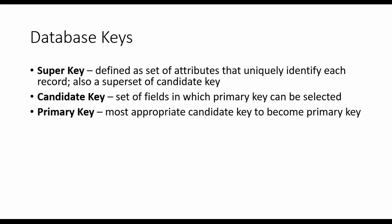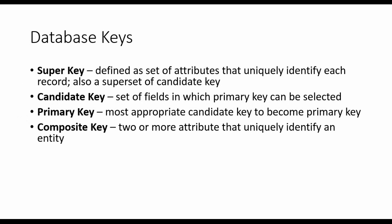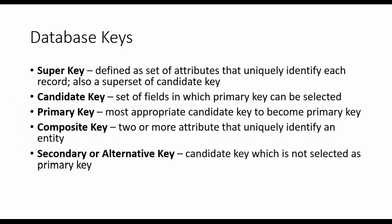Next, composite key. A composite key is nothing but two or more attributes that can uniquely identify an entity — an entity being a particular row or record. Next, secondary or alternative key — the candidate key which is not selected as a primary key is called an alternate key.